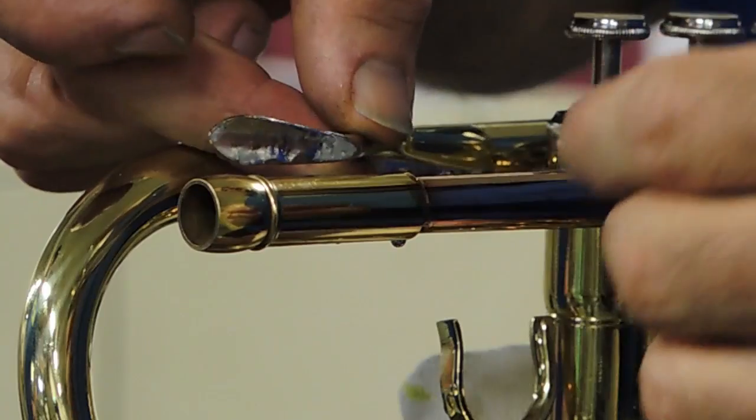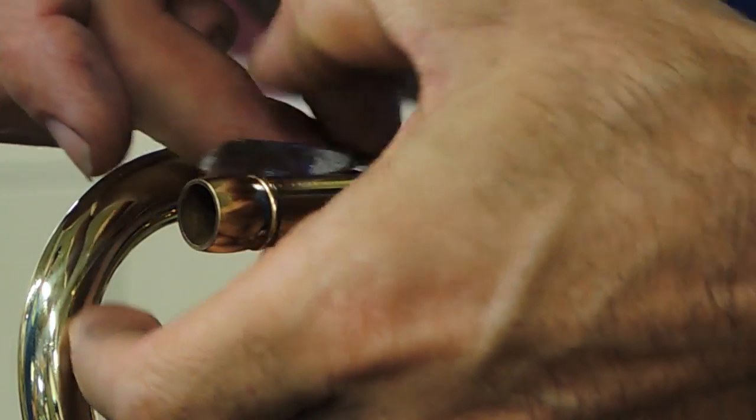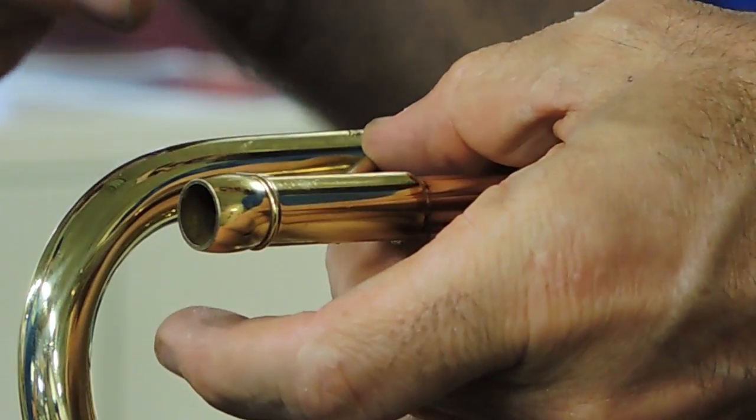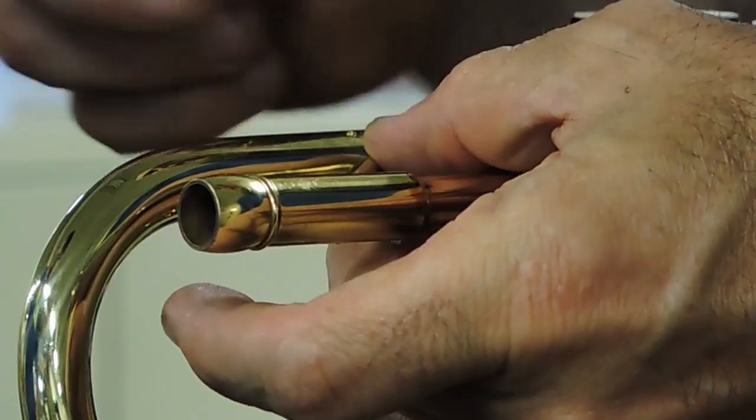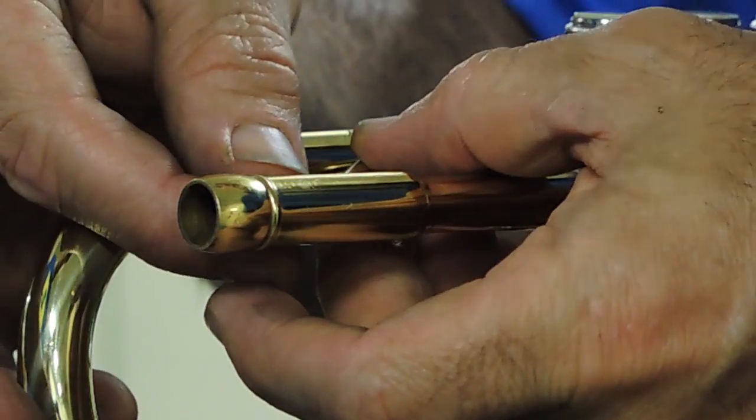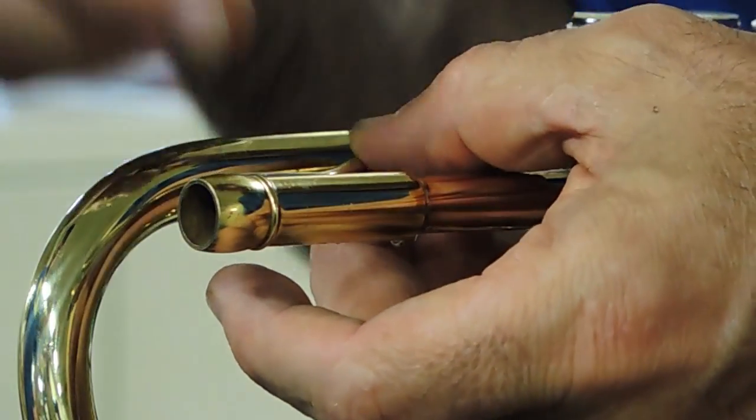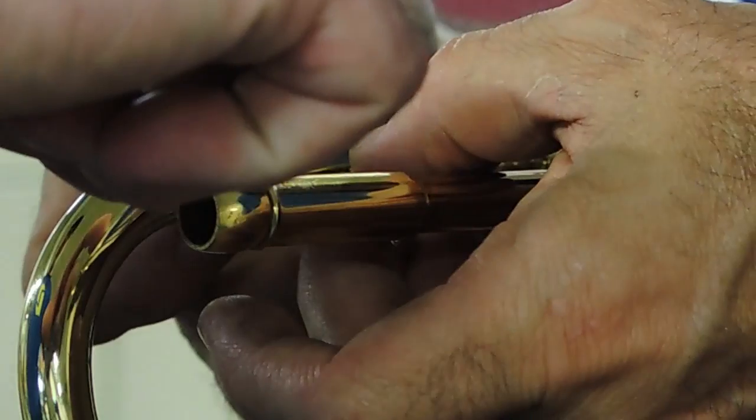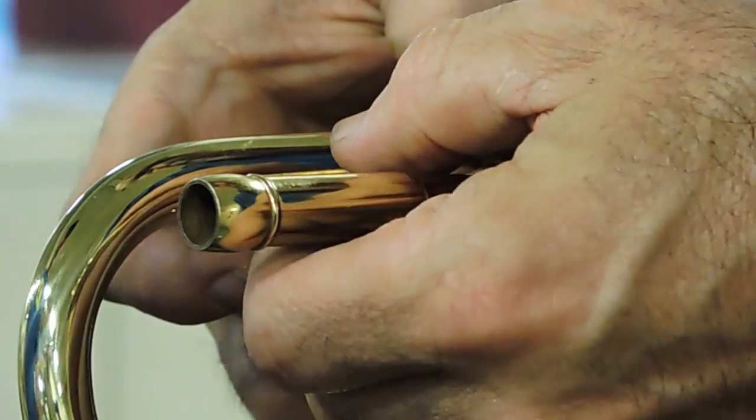Now we've got to put this brace back on. We took that off in order to move the mouthpiece socket forward. So I've got to put that back. This is also soft-soldered, so it's going to be the same sort of job.